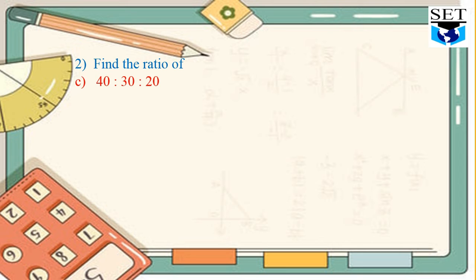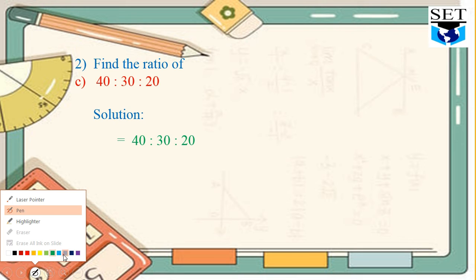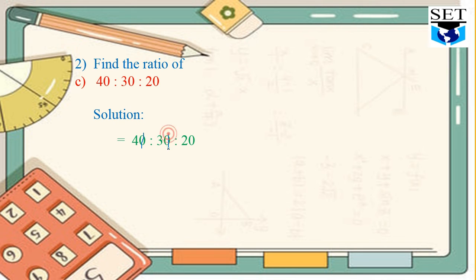Example number 3: we have to find a ratio of 40, 30 and 20. Here you can see, instead of two quantities, we have three quantities. We can also find the ratio of more than two quantities. Like this: 40 to 30 to 20. We will simplify it. We will cancel all the zeros of 40, 30 and 20, and the ratio of these numbers is 4 to 3 to 2. This is our answer.